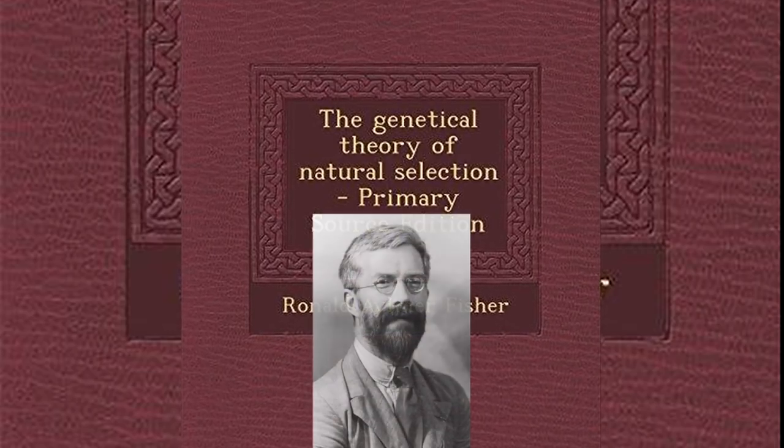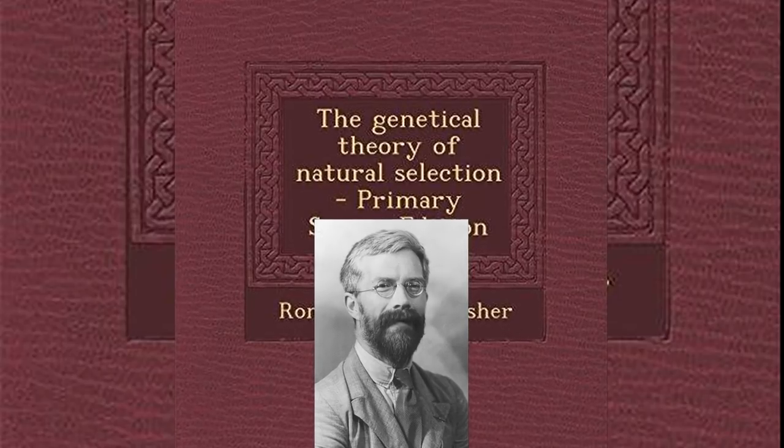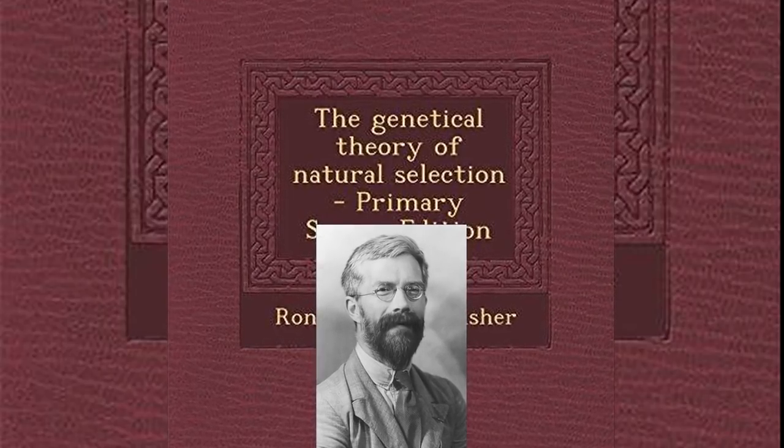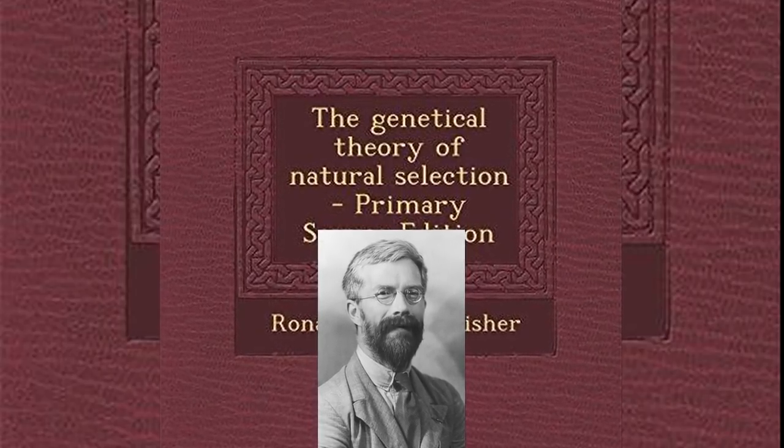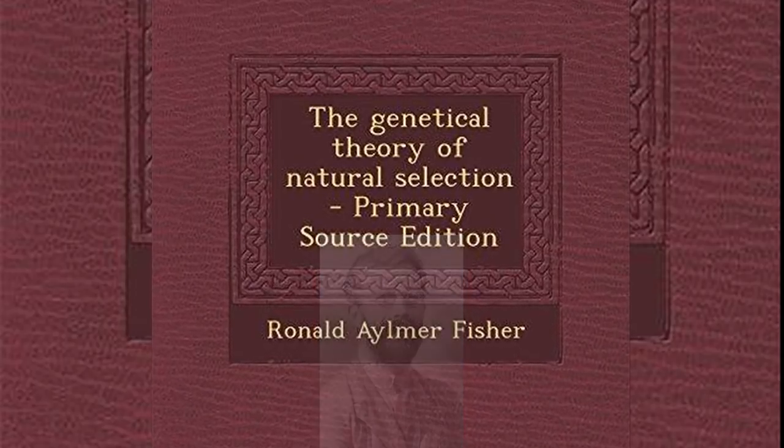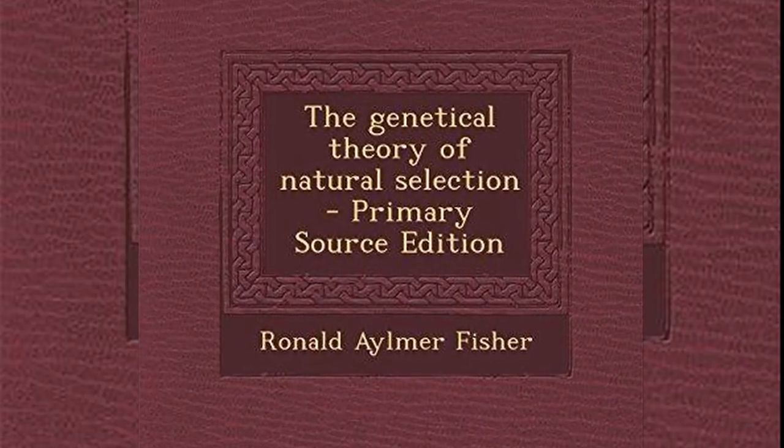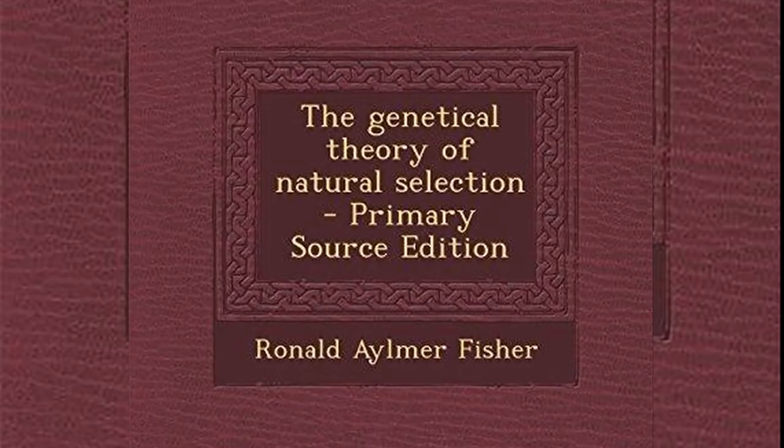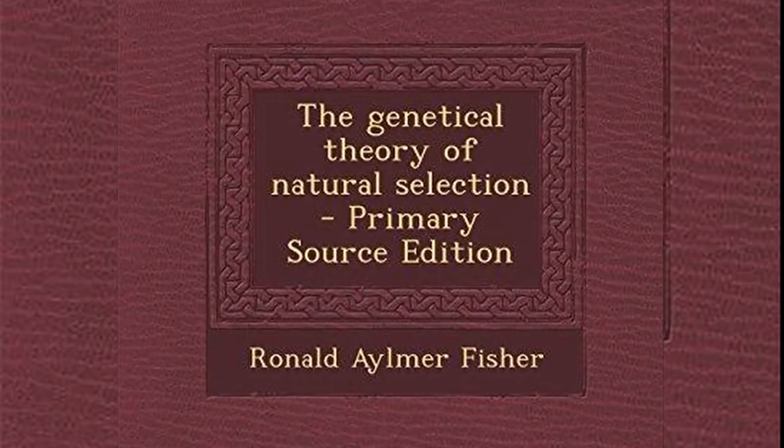In 1930, Ronald Fisher published the Genetical Theory of Natural Selection, noting that the rate of increase in the mean fitness of any organism at any time ascribable to natural selection acting through changes in gene frequencies is exactly equal to its genetic variance in fitness at that time. While employing some mathematical principles...